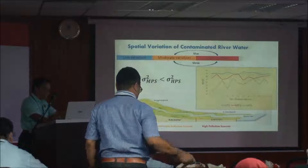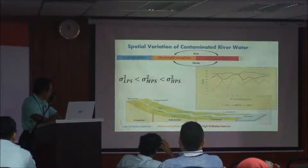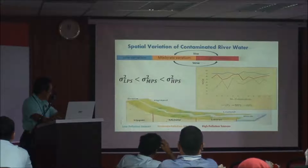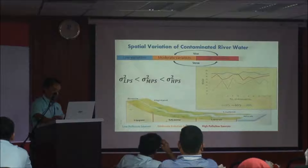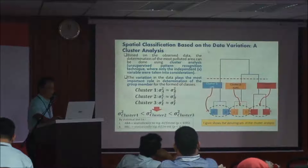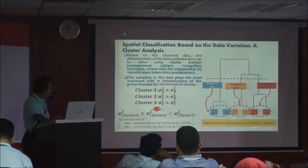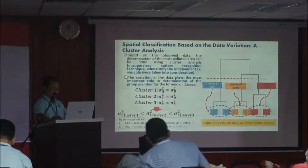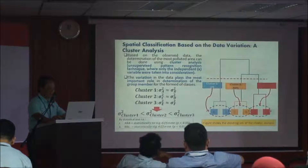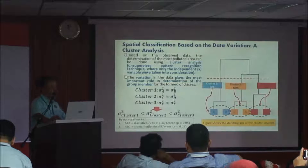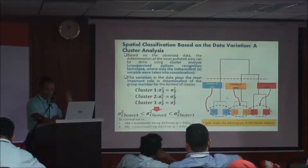For an early assumption, we can see that low pollution sources are located upstream, moderate in the middle, and high pollution sources downstream — or between middle and lower, depending on land use activities. Spatial classification based on data variation uses cluster analysis, visualized as a dendrogram. Cluster analysis is an unsupervised pattern recognition technique where only the independent variable X is taken into consideration.